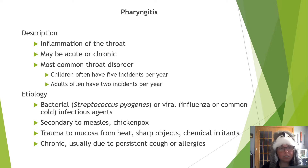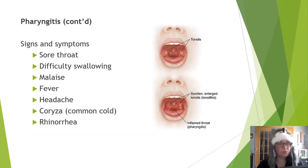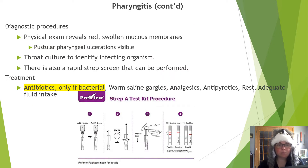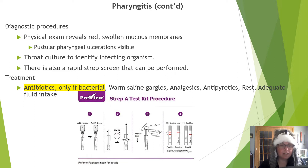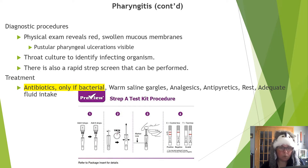Chronic pharyngitis is usually due to persistent cough or allergies. Signs and symptoms include sore throat, difficulty swallowing, malaise, fever, headache, coryza, or rhinorrhea. To diagnose, a physical exam reveals a red swollen mucous membrane where pustular pharyngeal ulcerations may be visible. A throat culture is collected to identify the infecting agent. A rapid strep A test can screen this condition and expedite treatment or rule out strep throat. Treatment includes antibiotics if bacterial, warm saline gargle, analgesics, antipyretics, rest, and adequate fluid intake.